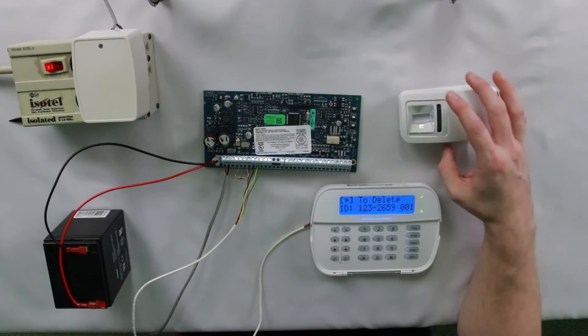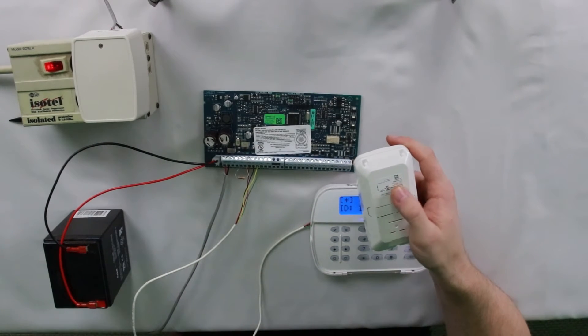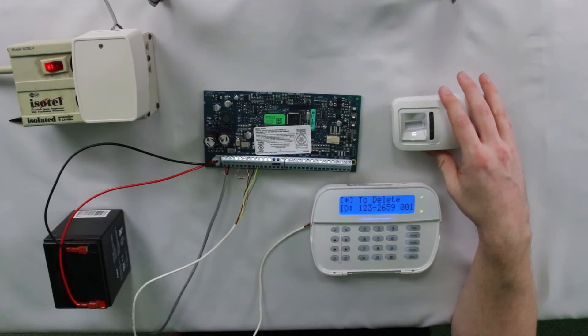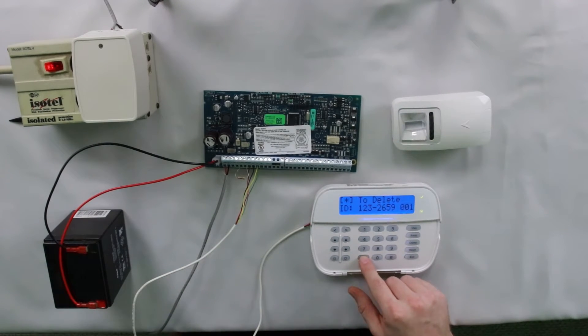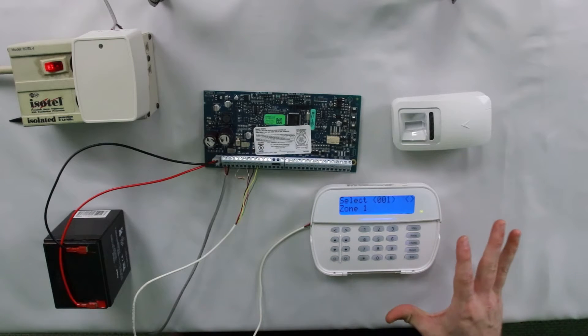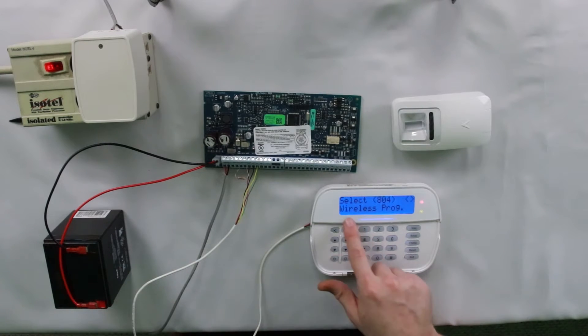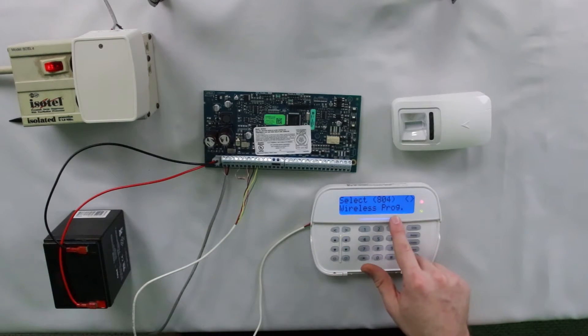Hit star. It's going to bring up the ID. You can double check. The ID should always be on a sticker on the device, but it is 1232659. So we're going to hit star again. Now that sensor has been deleted from the system. So to re-enroll it, hit pound two times to get back to where it says 804 wireless programming.